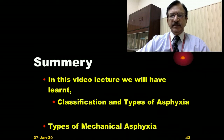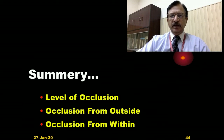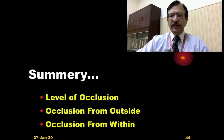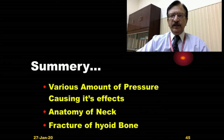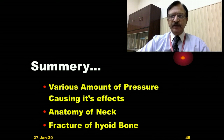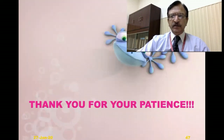In summary, this lecture covered various types of asphyxia as revision, and then detailed mechanical asphyxia types and levels of occlusion — occlusion from outside including smothering, hanging, and strangulation, and occlusion from within including choking, gagging, and drowning. Various pressures required to occlude neck structures were discussed, along with neck anatomy and fracture of the hyoid bone, which is important in various types of asphyxial deaths.